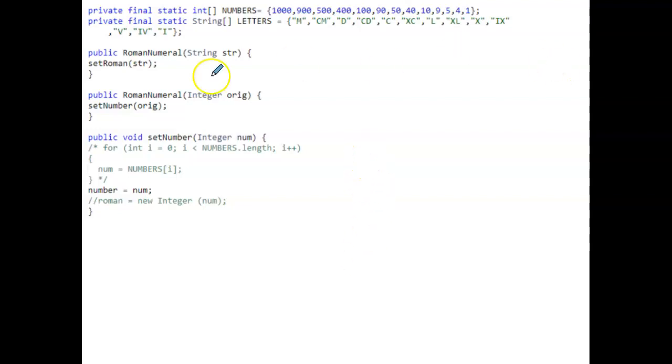Okay, so the issue that you're having is that your setNumber method is supposed to be accepting a number parameter, and the first thing that it should do is take that number that was passed by parameter and assign it to the instance variable number.